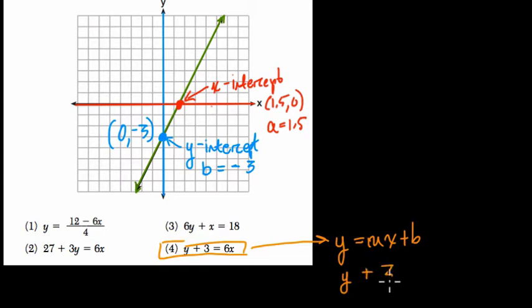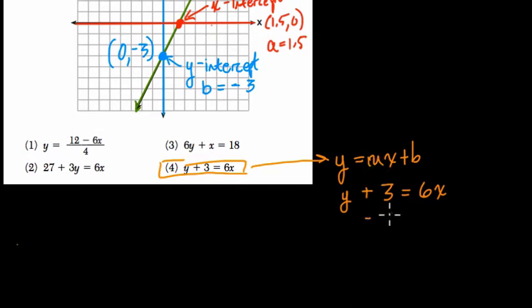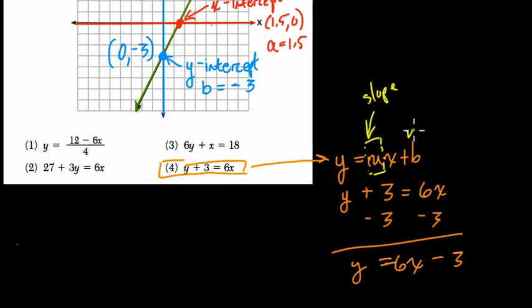We just were adding 3 to it on the left side. So to fix that, to isolate y and to read in mx + b format, we subtract 3 from both sides. And then y = 6x - 3. And what this means essentially, the m value is our slope, and the b value is our y-intercept.